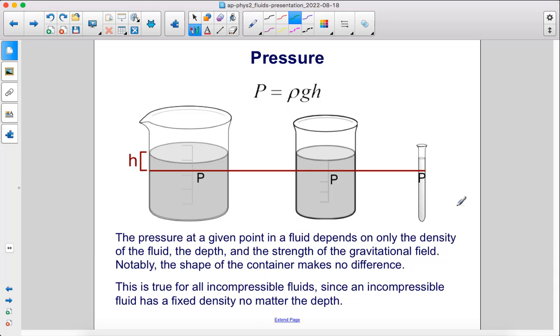The pressure at a given point in a fluid depends only on the density of the fluid, the depth, and the strength of the gravitational field. Notably, the shape of the container makes no difference. This is true for all incompressible fluids, since an incompressible fluid has a fixed density no matter the depth.